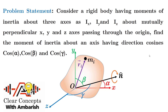What's the problem? Consider a rigid body having moments of inertia about three axes: IX, IY, and IZ — known about mutually perpendicular axes X, Y, and Z passing through the origin. Find the moment of inertia about an axis having direction cosines cos α, cos β, and cos γ. We know the transformation formula for the parallel axis, but this is not a parallel axis — it is inclined at some general direction cosines.